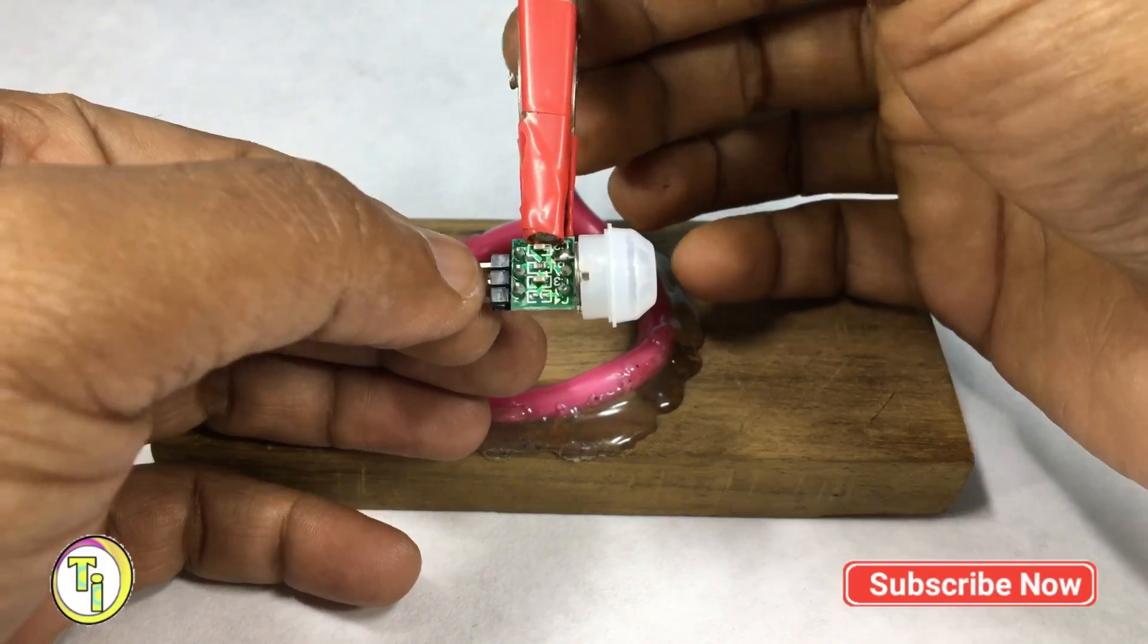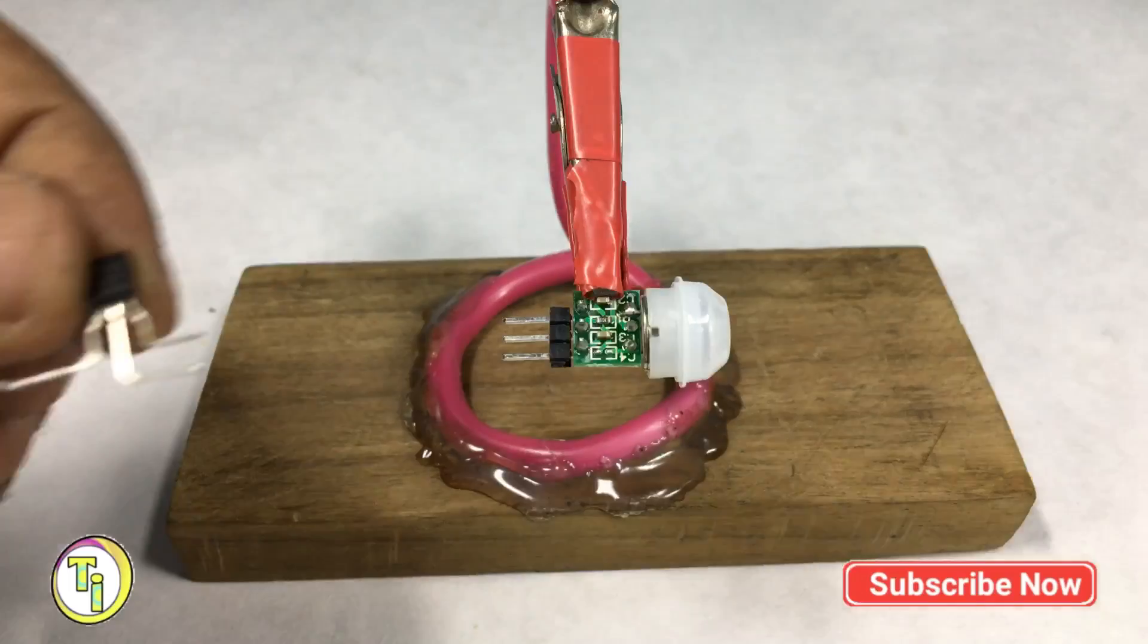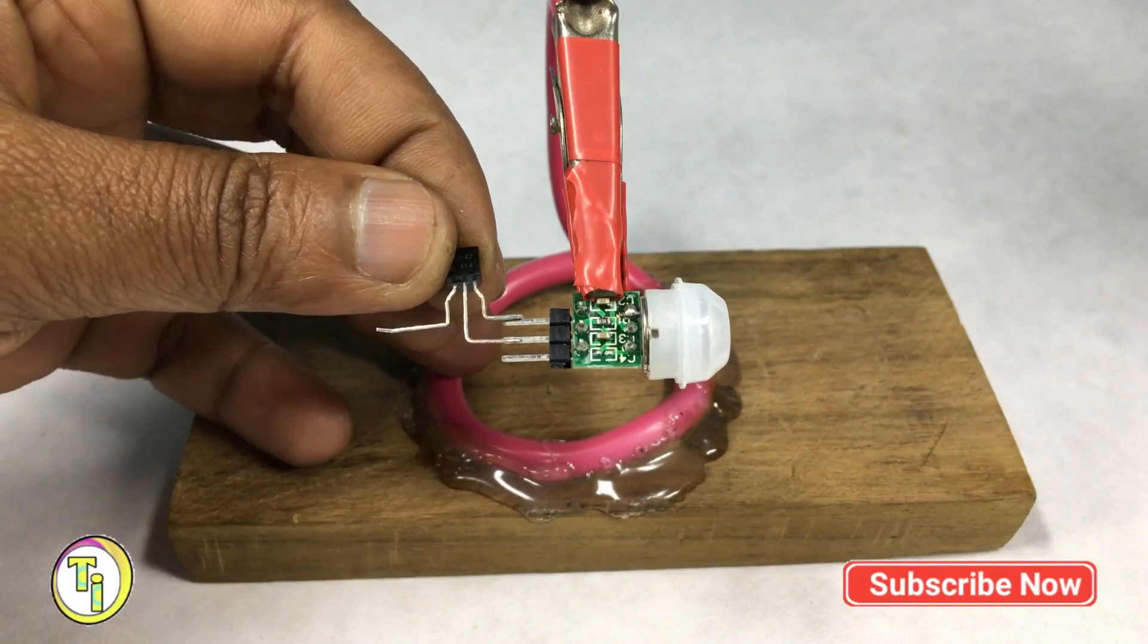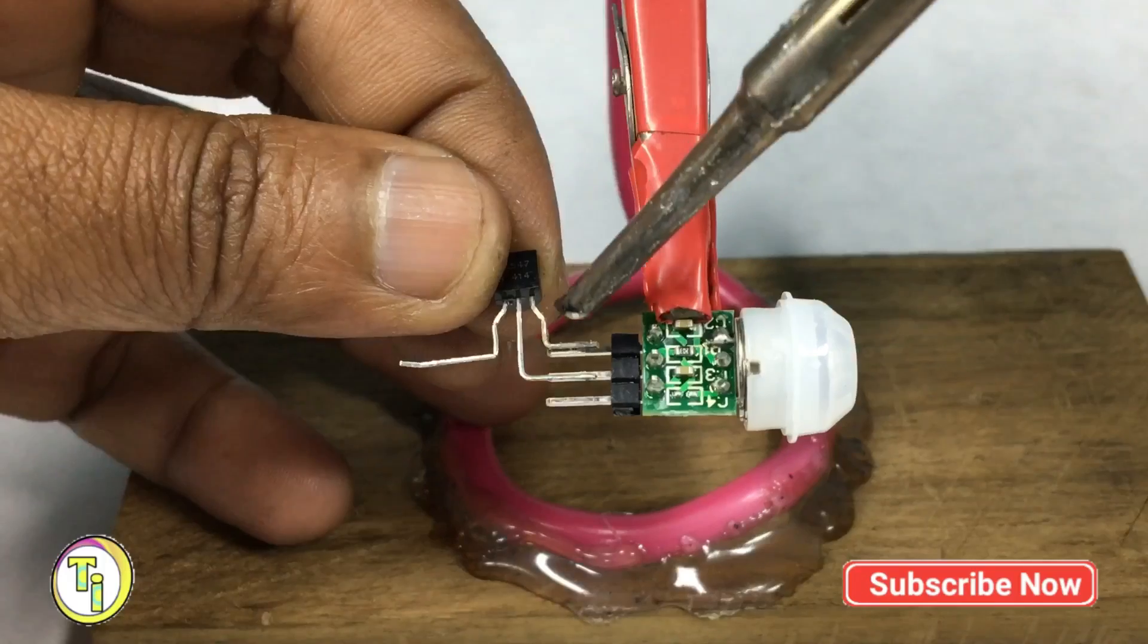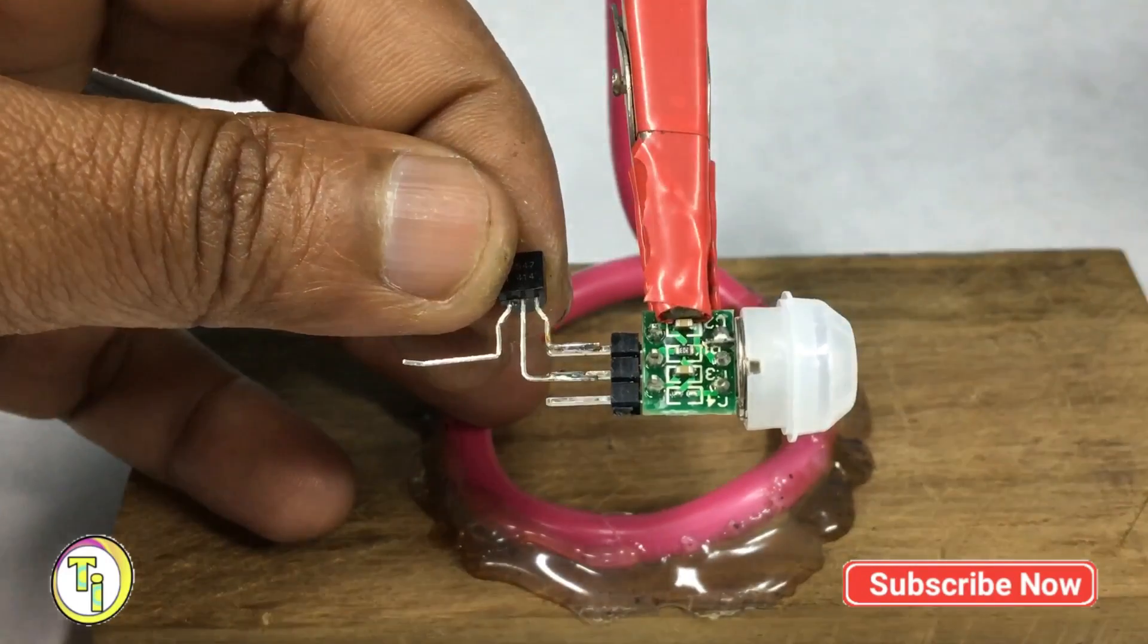First, take the PIR module and connect the BC547 transistor's emitter to the ground pin and base to the out pin.